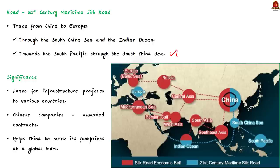Under this project, the Chinese government helped in providing loans for the infrastructure projects to various countries. In many cases, Chinese companies were awarded contracts for carrying out the work. This helped China mark its footprints at a global level. So this is the significance of Belt and Road Initiative of China. And with this, we have come to the end of the discussion.